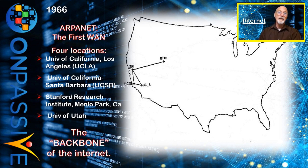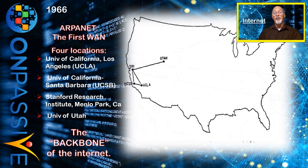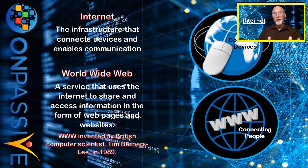ARPANET was originally in four separate locations: the University of California Los Angeles, the University of California Santa Barbara, Stanford Research Institute in California, and the University of Utah. Ever since then, governments, industry, and academia have been working hard to evolve and deploy internet technologies as they became available. Not only was ARPANET a forerunner to the internet — it was actually the internet's backbone during development.